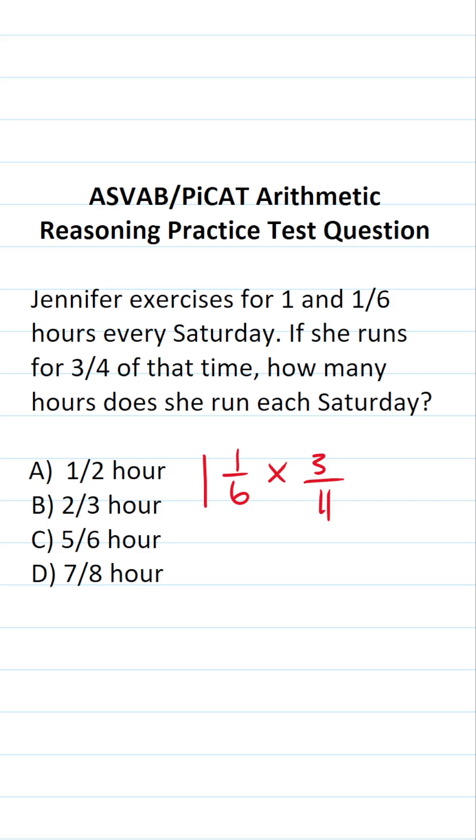The way to multiply a mixed number by a fraction is to first convert the mixed number into an improper fraction.